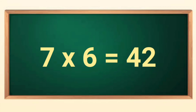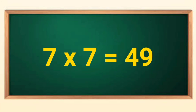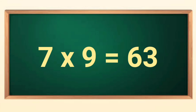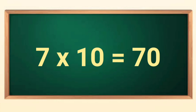Seven sixes are forty-two. Seven sevens are forty-nine. Seven eights are fifty-six. Seven nines are sixty-three. Seven tens are seventy.